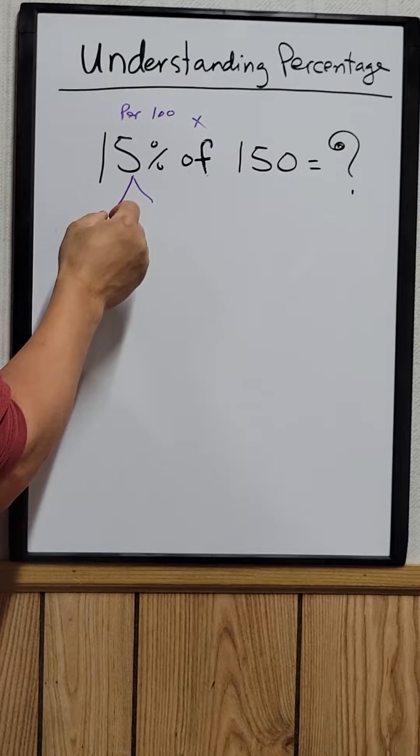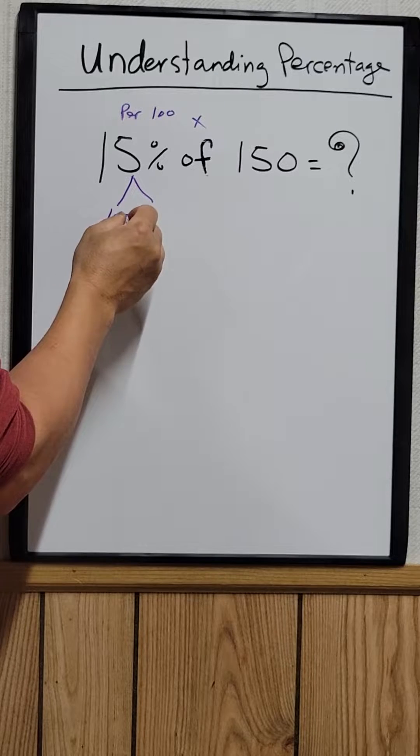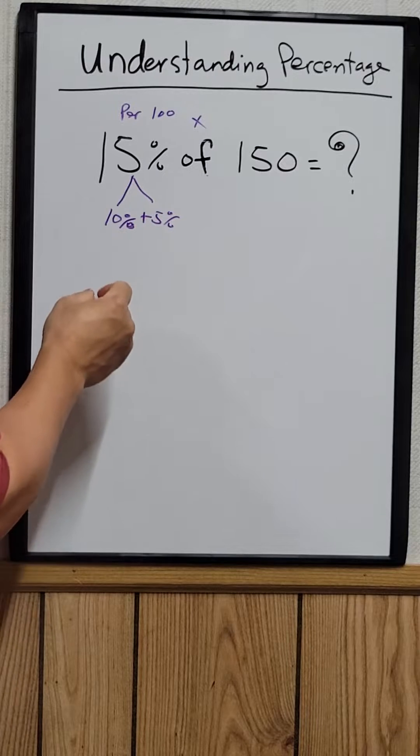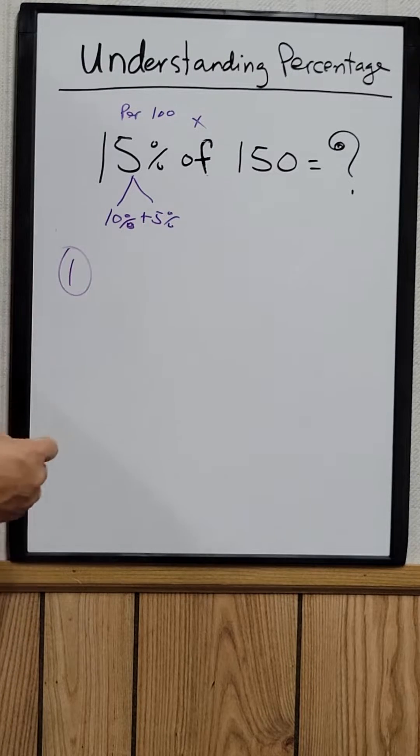You can say 15% equals 10% plus 5%. So that's method number one.